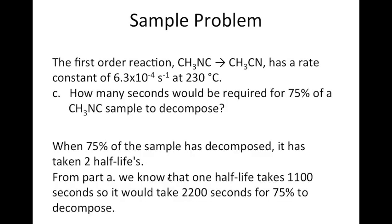For part C: how many seconds for 75% of the reactant to decompose? A 75% decomposition corresponds to two half-lives. After the first half-life, 50% remains; after the second half-life that 50% is halved again to 25%, meaning 75% has decomposed overall. From part A, one half-life is 1,100 seconds, so two half-lives is 2,200 seconds — that is how long it takes for 75% to decompose.